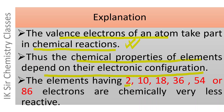The elements having 2, 10, 18, 36, 54, or 86 electrons are chemically very less reactive. It is noteworthy that these are the atomic numbers of helium, neon, argon, krypton, xenon, and radon respectively, which are chemically very less reactive.